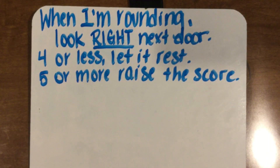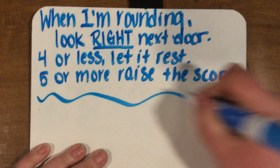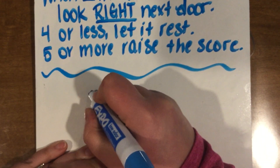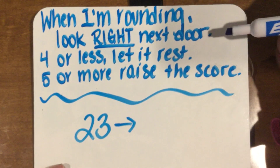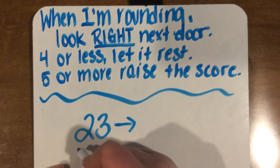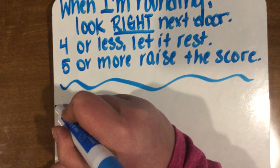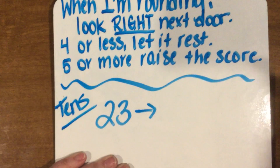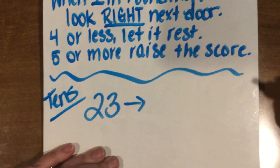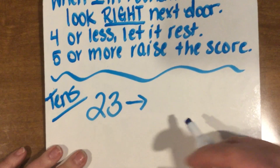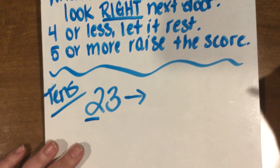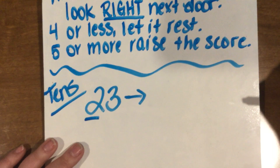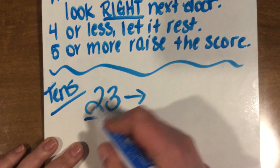So what do I mean by that? Let's look at the number 23. So when I'm rounding, look right next door. I'm going to round to the nearest tens place. What number is in my tens place for the number 23? Two, right? So I always like to underline the place that I'm rounding to. So in this place it's two.